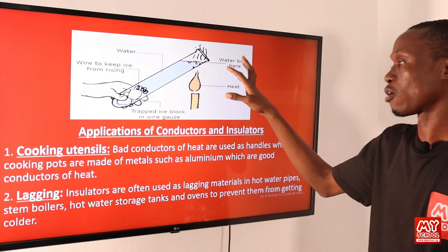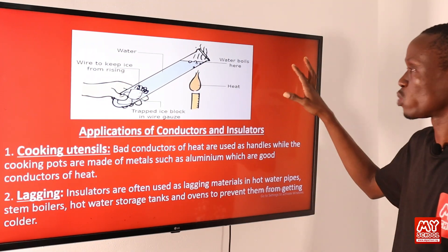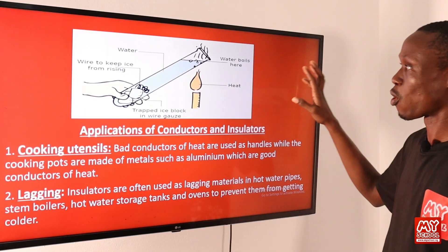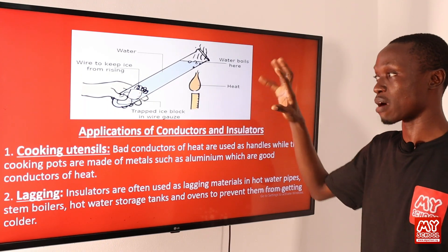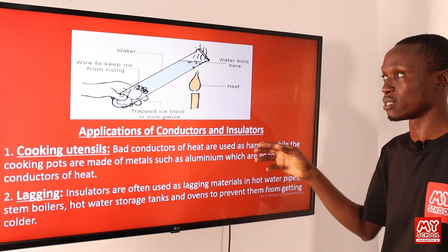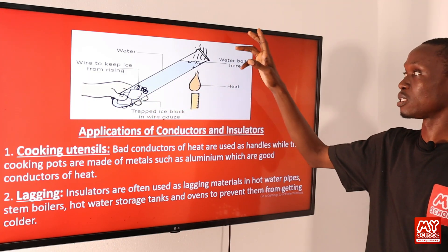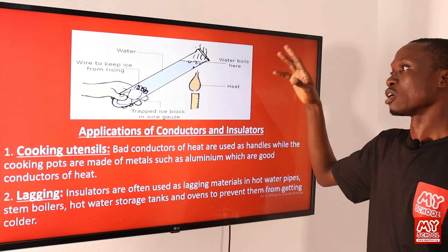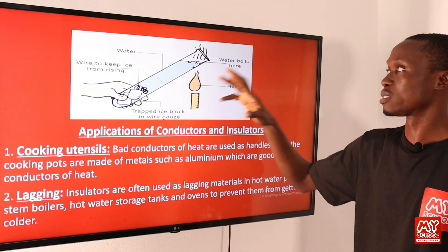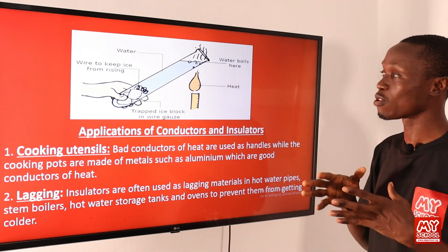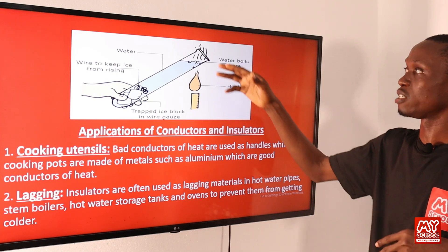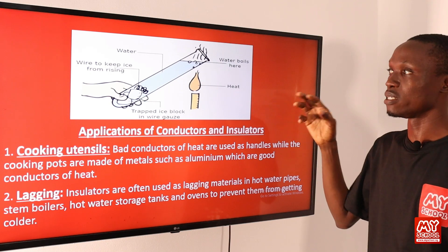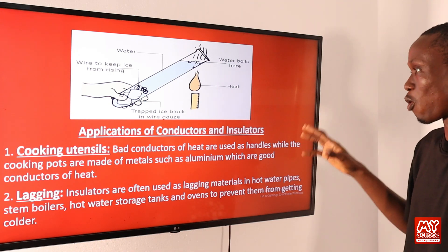This diagram illustrates the experiment just described — showing that water is a bad conductor of heat. The ice block wrapped in wire gauze is at the bottom of the test tube. The top of the water was heated and started boiling, but the ice at the bottom of the test tube did not melt. This is because water was not able to conduct the heat from the top to the bottom of the test tube, confirming that water is a poor conductor of heat.